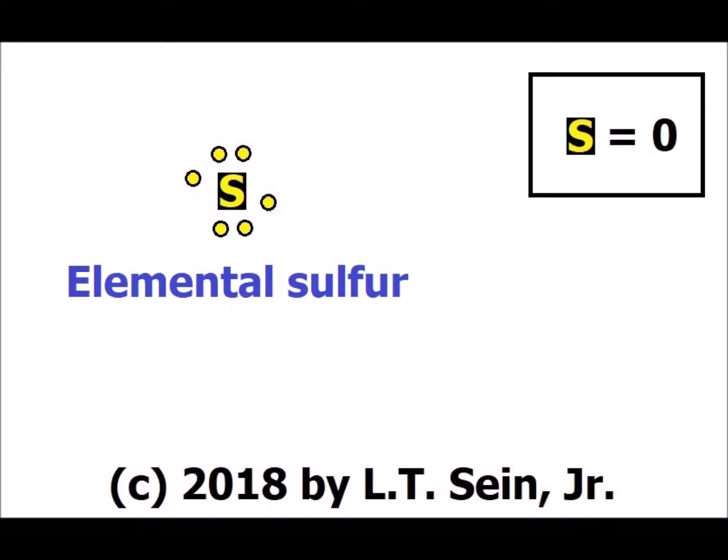This will also be our reference point for the oxidation number, because when sulfur is neutral — when it has an oxidation number of 0 as an element — it will have 6 electrons. All our references will be to exactly how many electrons sulfur has relative to its expected value, its normal value, of 6 electrons.